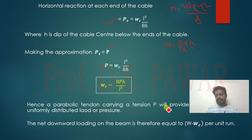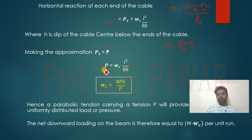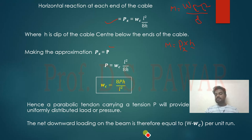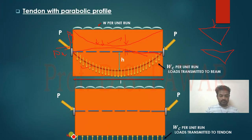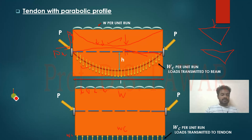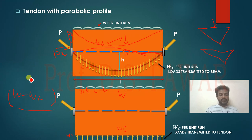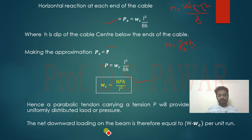Hence, a parabolic tendon carrying a tension P will provide a uniform distributed upward load of pressure Wc = 8PH/L² on the beam. The net downward loading on the beam is therefore W minus Wc per unit run, where W is the external UDL and Wc is the upward load provided by the parabolic tendon.